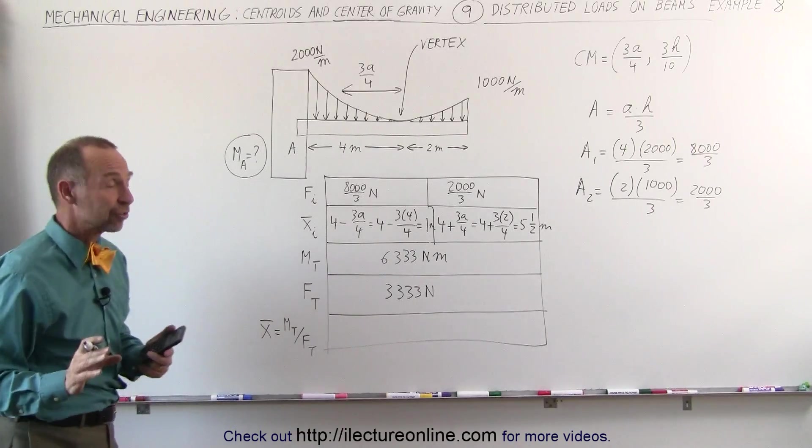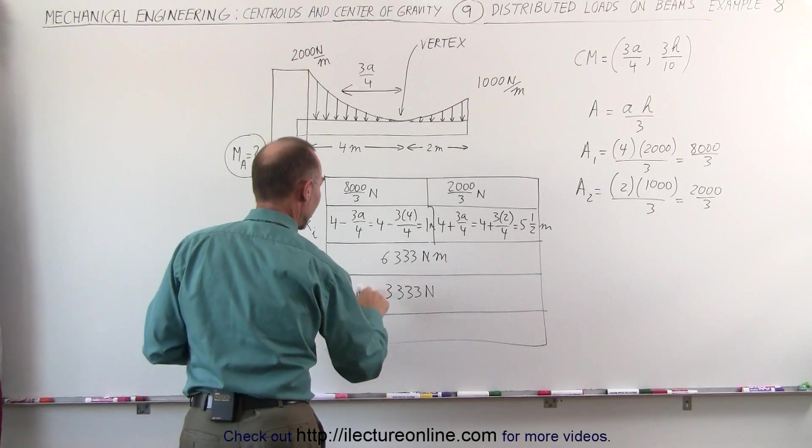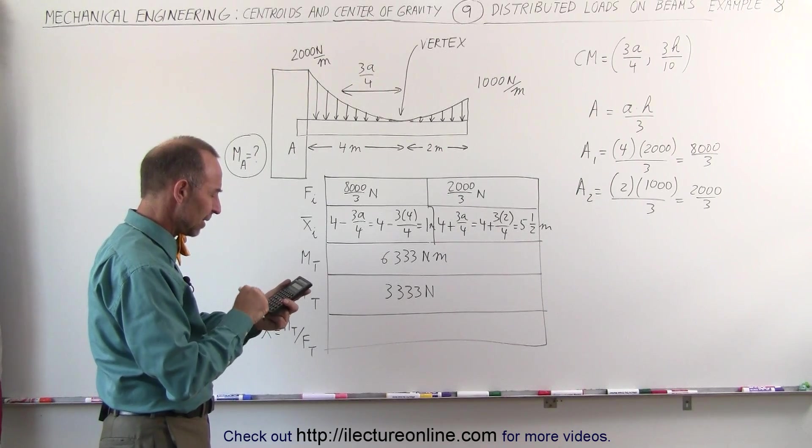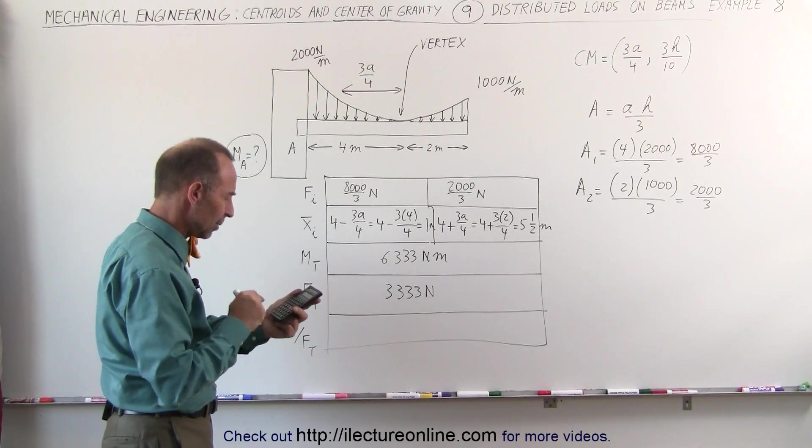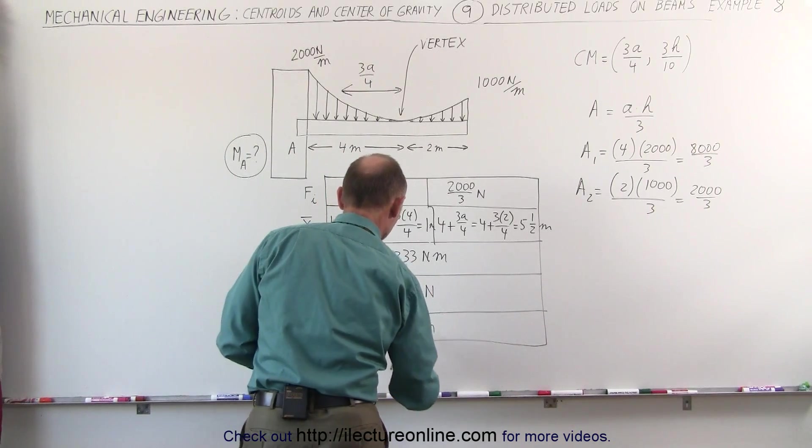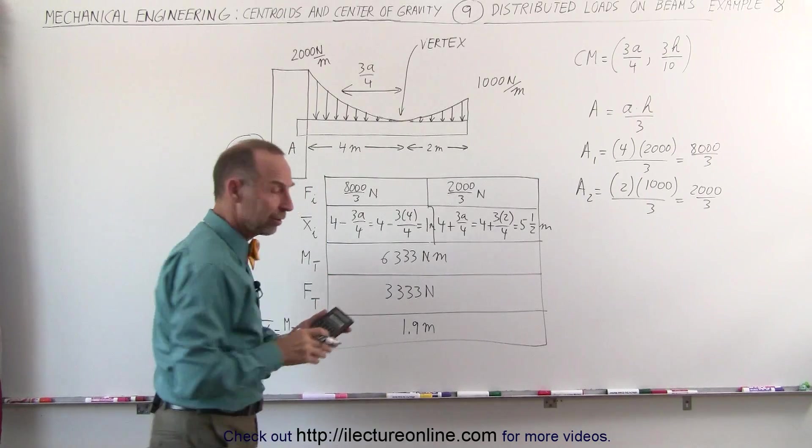Now we can find the x-coordinate of the centroid, this divided by that, 6,333 divided by 3,333 equals, and it's 1.9 meters is the distance from A to the centroid.